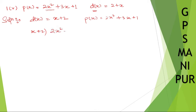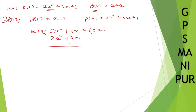We have 2x squared plus 3x plus 1. Now x into how much gives 2x squared? It is 2x. So x into 2x gives x squared, and 2 into 2x gives 4x. Change the sign: plus becomes minus, plus becomes minus. These two cancel, giving 3x minus 4x, so minus x.